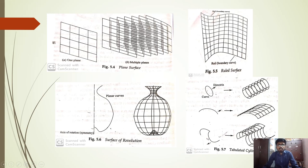A ruled surface is a linear surface. We interpolate two boundary curves to form a ruled surface. The boundary curves are also known as rails. In the ruled surface, we do not have any twists or kinks.